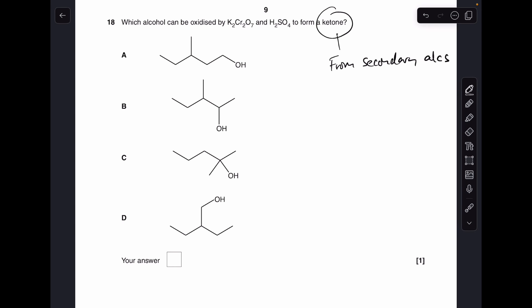Number 18. Which alcohol can be oxidized by acidified dichromate to form a ketone? So ketones are formed from secondary alcohols. So basically we're looking for the secondary alcohol. So it can't be A because that's primary. B is the answer because that is a secondary alcohol. It can't be C because that's tertiary. And it can't be D because that's primary.